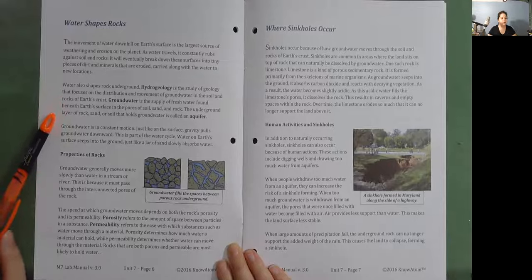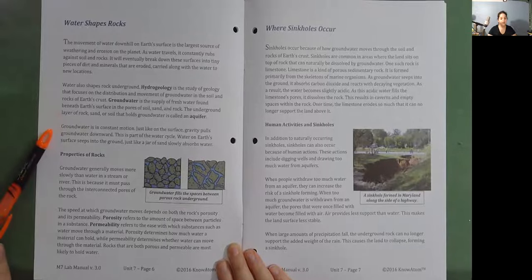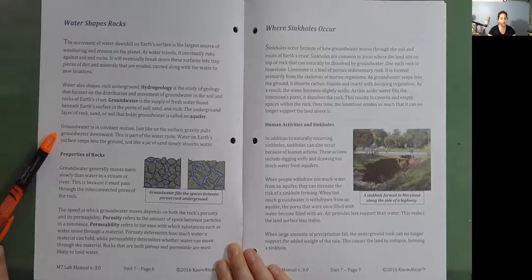The underground layer of rock, sand, or soil that holds groundwater is called an aquifer. Groundwater is in constant motion. Just like on the surface, gravity pulls groundwater downward. This is part of the water cycle. Water on Earth's surface seeps into the ground, just like a jar of sand slowly absorbs water.